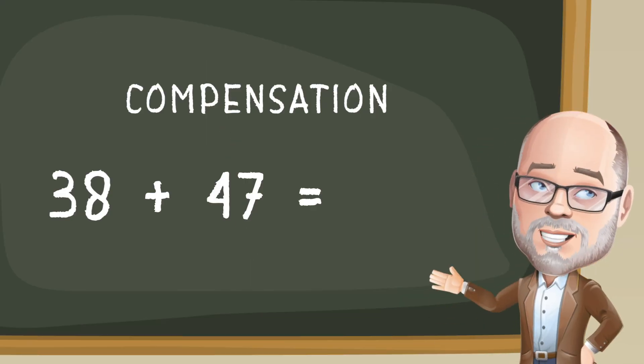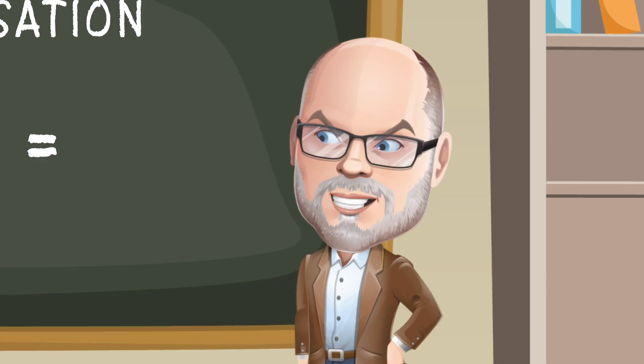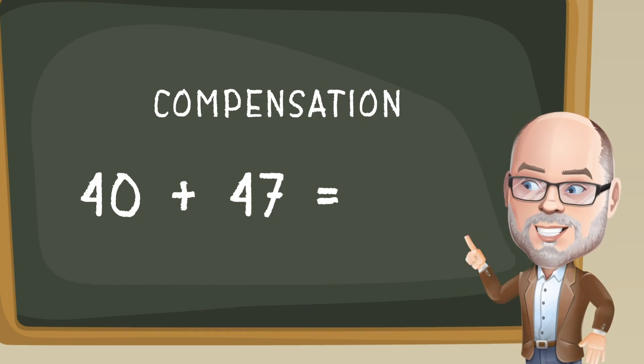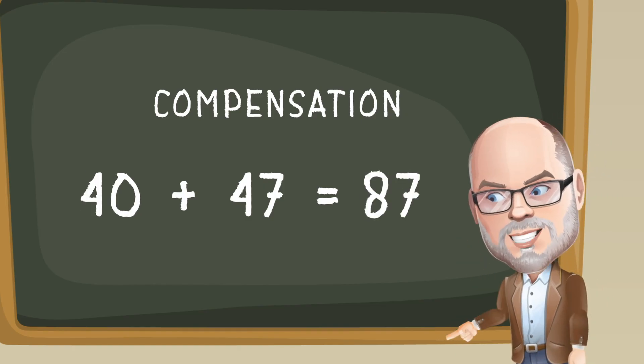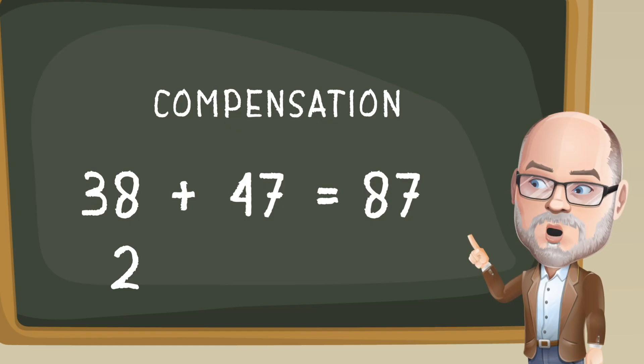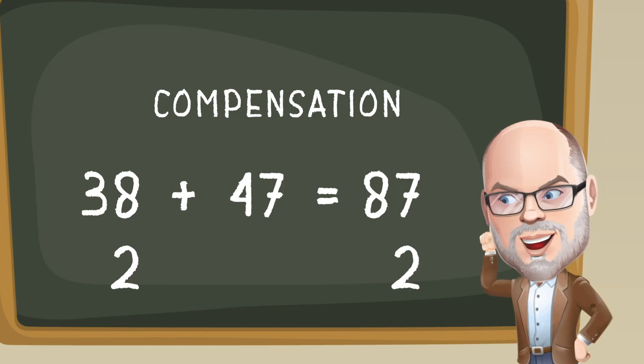Let's think about 38 plus 47 one more time. Sure, changing both add-ins works, but could we change just one? Yeah, we can. 38 plus 47 can be adjusted to 40 plus 47, which is 87. Then we would take 2 off because 40 is 2 more than 38. 2 off from 87 is 85.